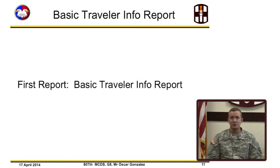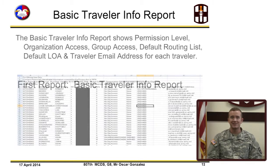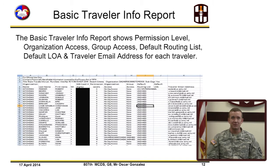The first report we will discuss is the Basic Traveler Info report. This report shows the following information for each traveler: permission level, organization access, group access, default routing lists, default LOA, and the traveler's email address.